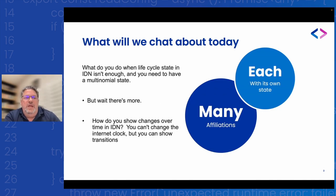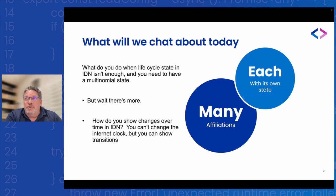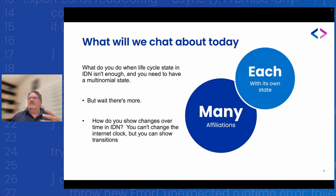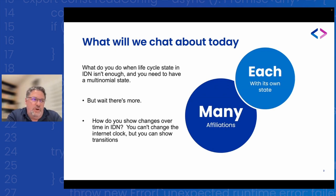That's where I came up with this idea of multiple affiliations — the multinomial state. We'll also talk about being able to go back in time. This was a use case from a potential customer who wanted, in Identity Now, to retain a record for 30 days. You may leave as a student or student worker, and they wanted to retain that for 30 days and then have it go away.